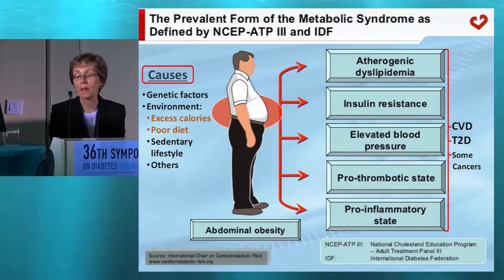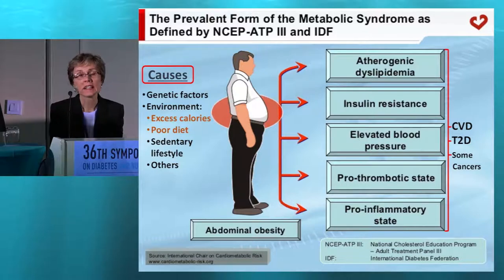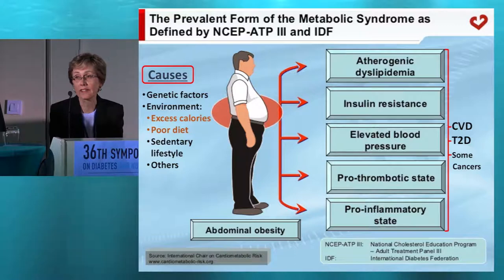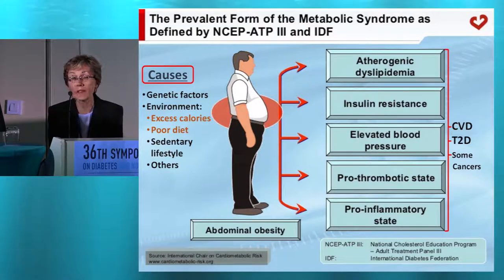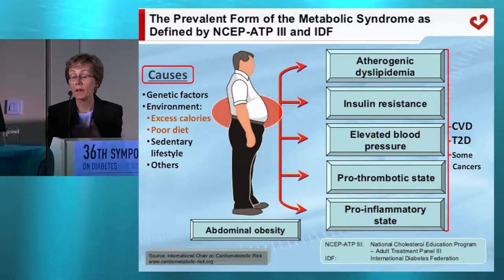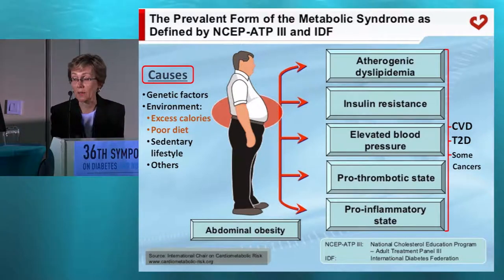We all know about metabolic syndrome. A key cause is excess calories and a poor diet, along with sedentary lifestyle, leading to obesity and, in particular, abdominal obesity. We're so concerned about these because metabolic syndrome markedly increases risk for cardiovascular disease, type 2 diabetes, as well as some cancers.